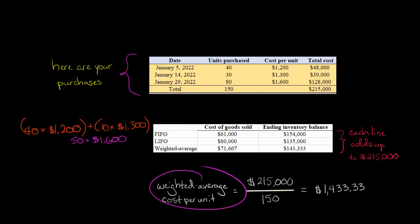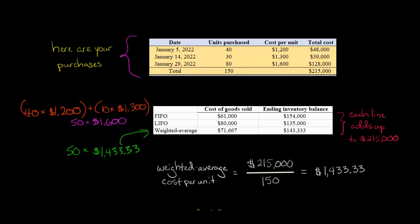Now, weighted average method, we have to calculate a weighted average cost per unit. So we take the total cost, $215,000, divided by the total number of units purchased, 150, gives us $1,433.33. So we sold 50 units, so we're going to have 50 times $1,433.33 to give us $71,667. I rounded to the nearest dollar there, and again, these two together add up to $215,000.